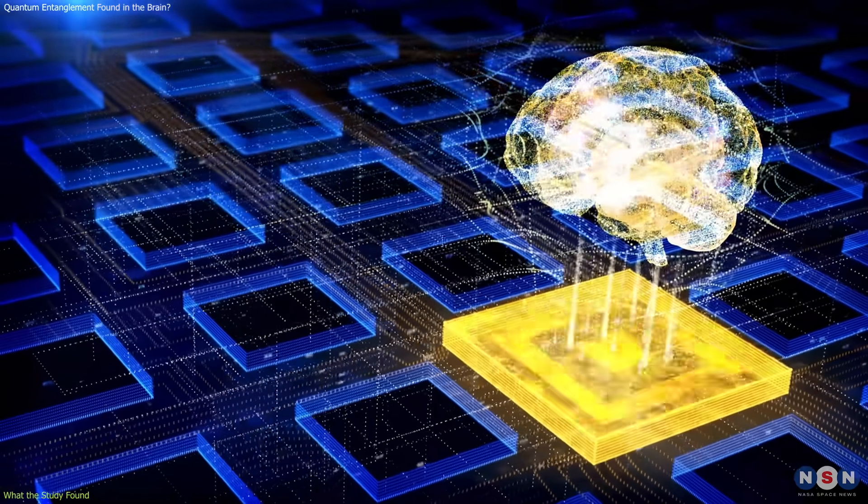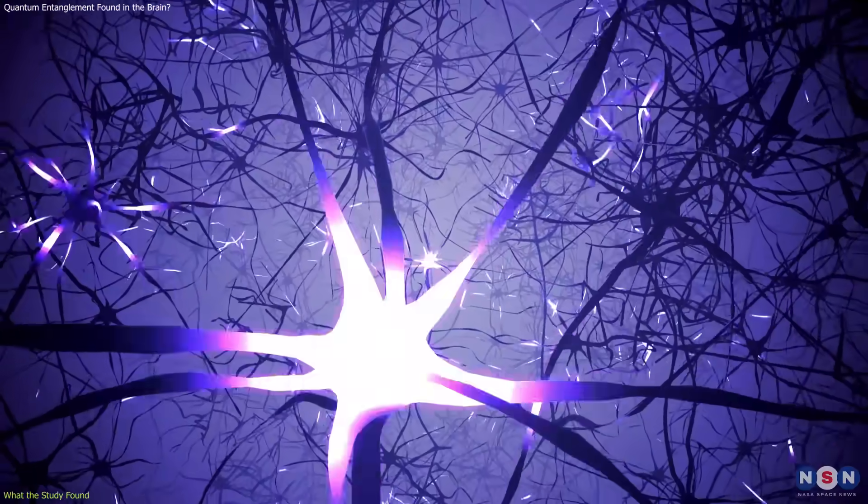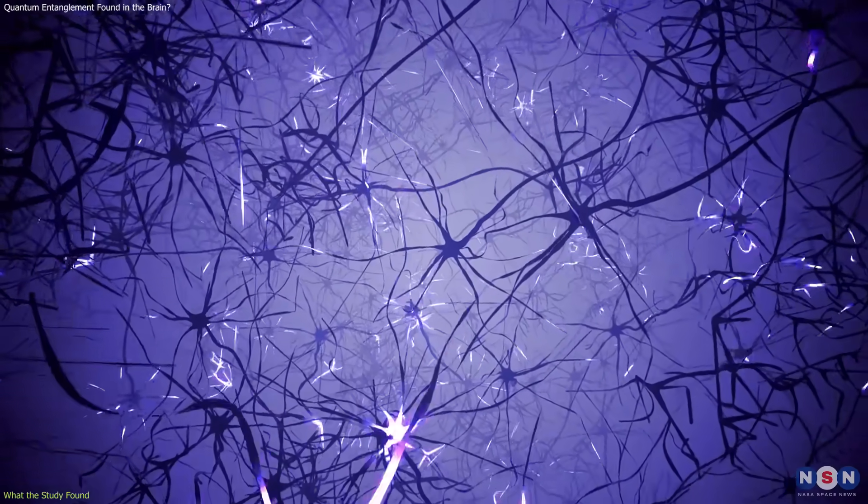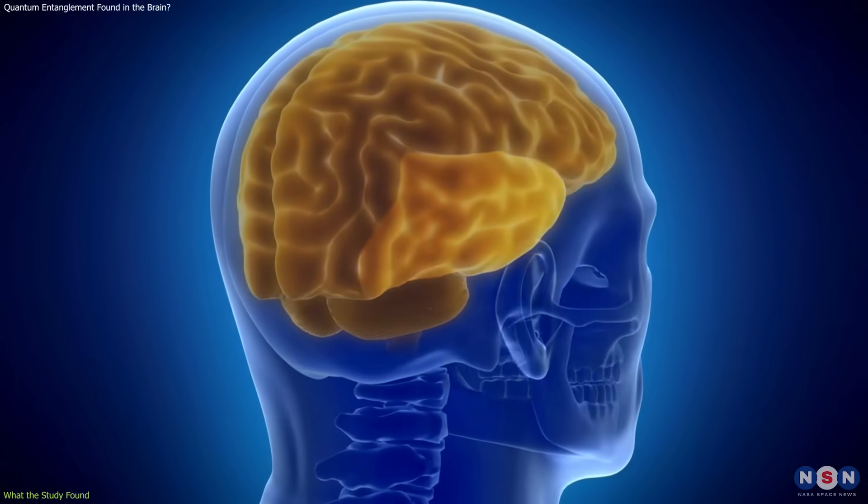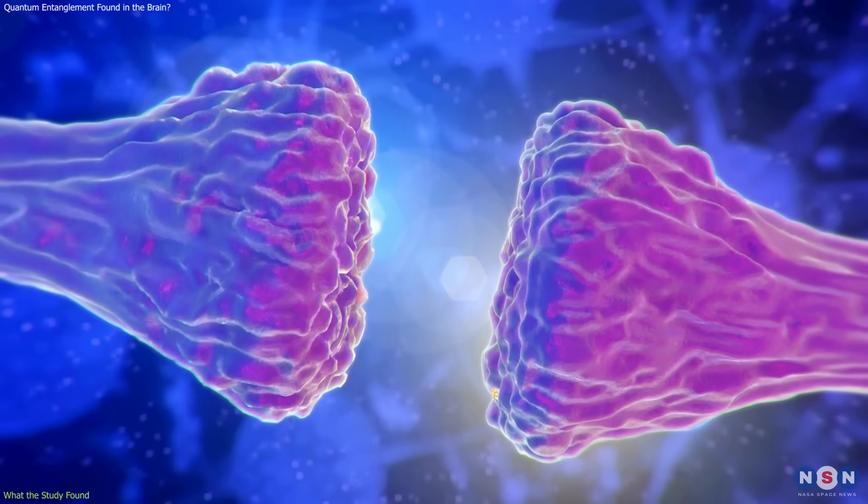This hypothesis doesn't suggest that the brain is acting like a quantum computer. Instead, it proposes that a quantum communication layer might operate in parallel with classical electrical signaling. That could help explain how different brain regions coordinate activity faster than traditional synaptic transmission alone can account for.